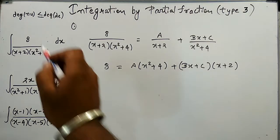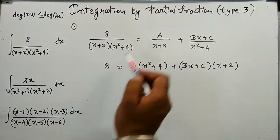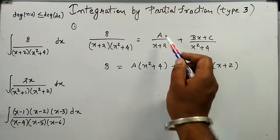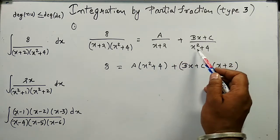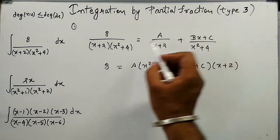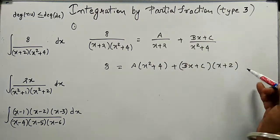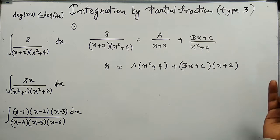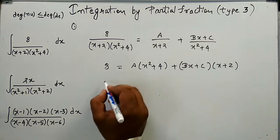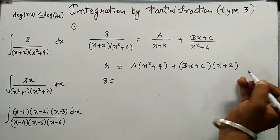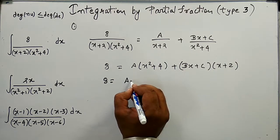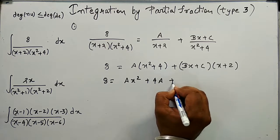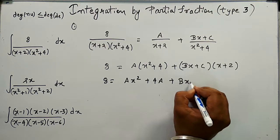In the first example we are going to evaluate the partial fraction form of this rational expression, which will look like A/(x+2) plus (Bx+C)/(x²+4). If we take the LCM of the terms in the denominator we will get this equation. Now we only need to find the values of A, B, and C.